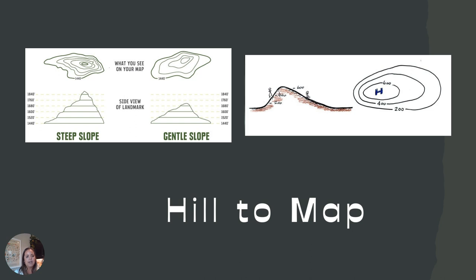Looking at steep slope versus gentle slope in cross section and map view: on the steep slope, there are a lot more contour lines close together. With a gradual slope, the contour lines are further apart and you see a lower-elevation, gentler slope. This helps you understand the relationship between the cross section and the topographic map and what that means for the steepness of the slope.